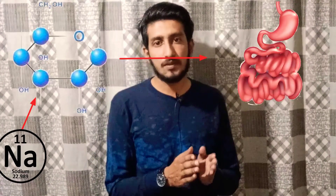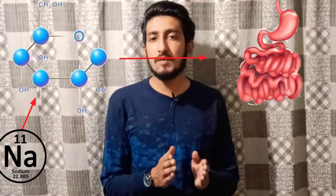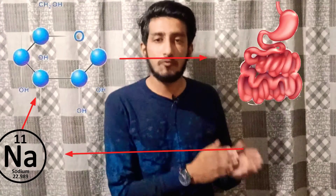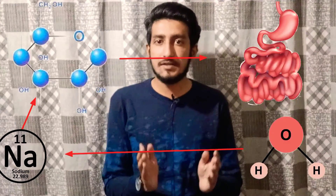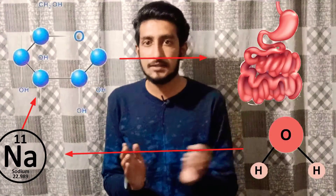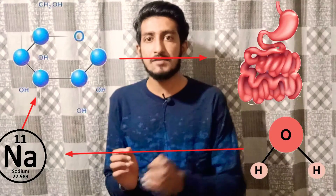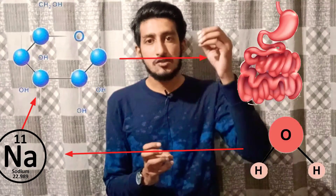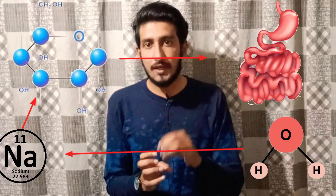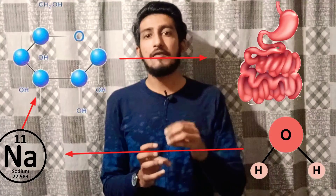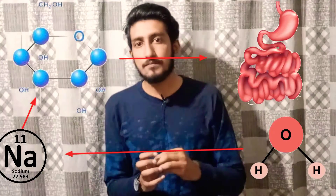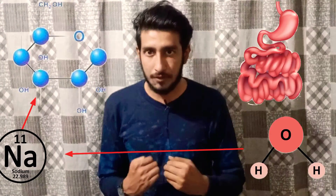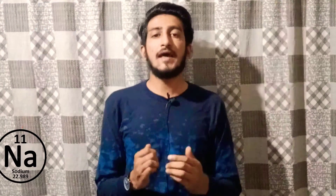Whatever the severity of diarrhea, glucose will be absorbed into the intestine coupled with sodium absorption, and sodium absorption is coupled with water absorption. So the intestine is simultaneously absorbing glucose, and due to glucose, sodium is also moving in, and due to sodium, water is also moving into the body — and hence rehydration takes place.